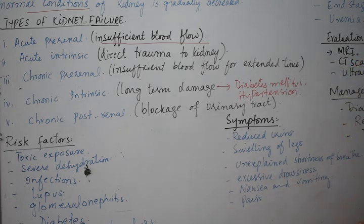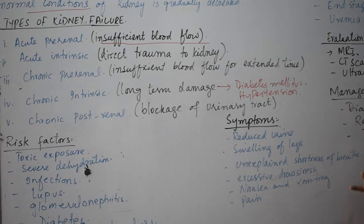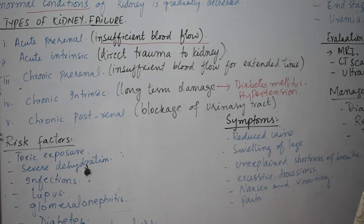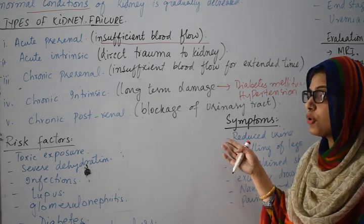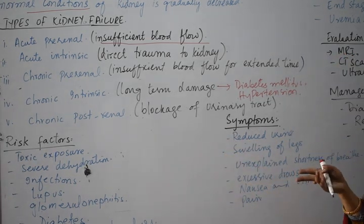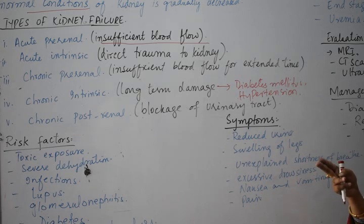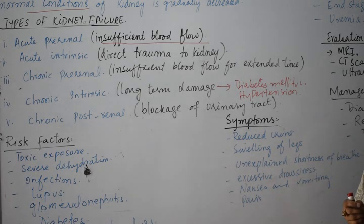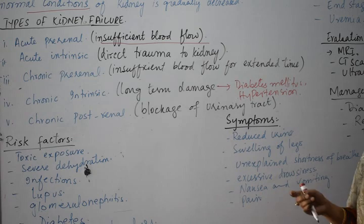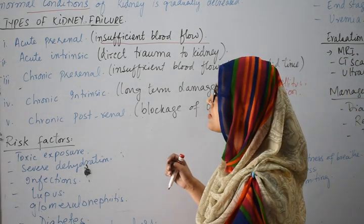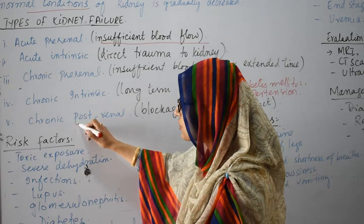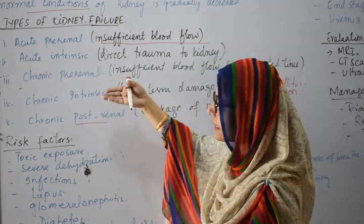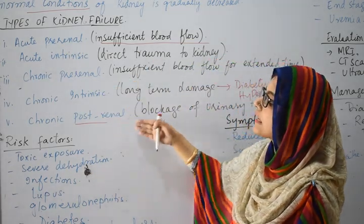Due to electrolyte concentration and increased blood flow pressure, filtration cannot function properly and the kidney slowly deteriorates. This can also be caused by a high filtration rate due to damaged glomeruli, which prevents filtration from maintaining normal conditions. Then we have chronic post-renal — pre-renal refers to issues before the kidney, and post-renal refers to the urinary tract after the kidney.